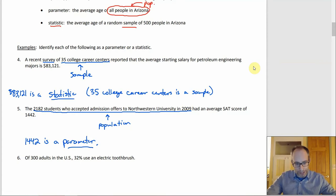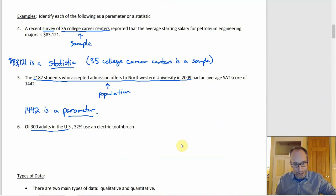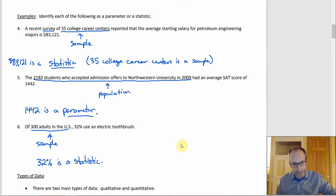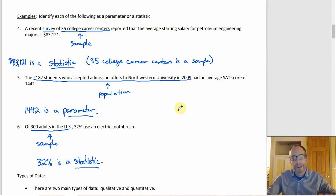Number six: 32% who use an electric toothbrush comes from 300 adults in the U.S. — way more adults than that exist, so this can't be the whole population. The 300 adults in the U.S. is a sample, so the 32% is a statistic. Parameter goes with population, statistic goes with sample — we just look at those groups and figure out if it's a population or a sample, and once we have that, we know what kind of measure we had.